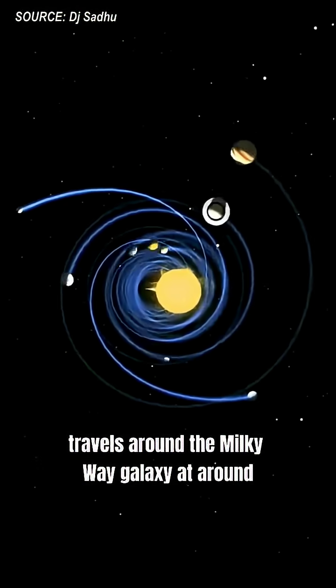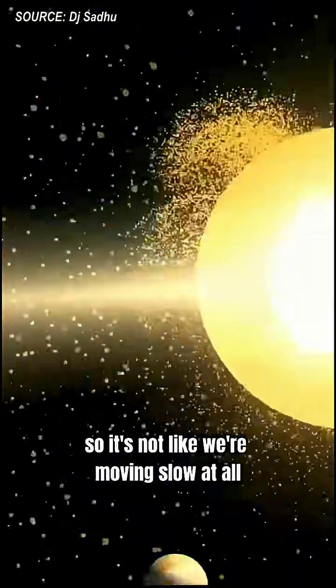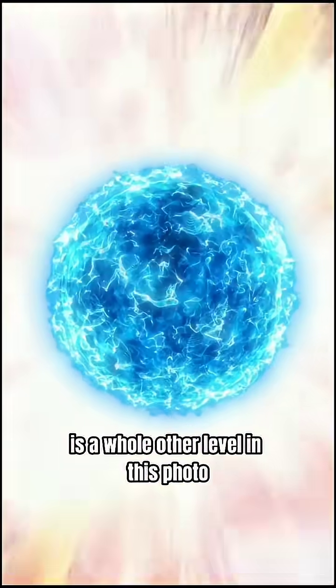For reference, our own sun travels around the Milky Way galaxy at around 450,000 miles per hour, so it's not like we're moving slow at all, but 1.2 million miles per hour is a whole other level.